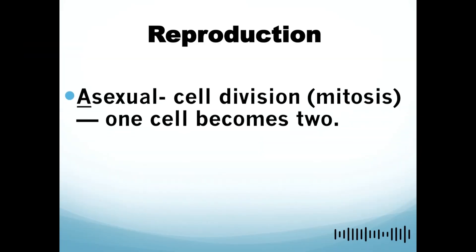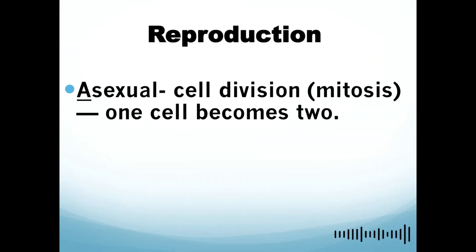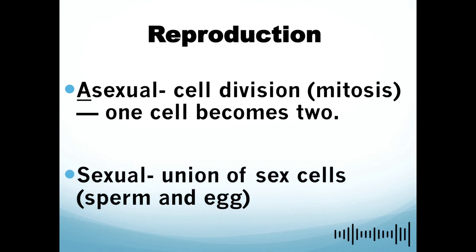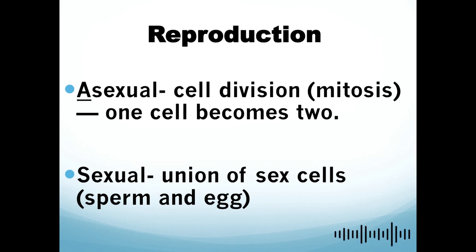Let's proceed to reproduction. For reproduction, we have two types. The first one is asexual cell division — mitosis — where one cell becomes two. The second one is sexual, which is the union of sex cells: the sperm and egg.